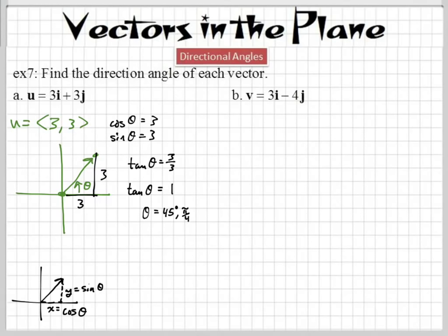Now, if you didn't remember that, you could have used inverse tangent, tangent inverse, or arctangent, but this is an angle that you guys should know. So, what's our directional angle? It's 45 degrees. That's it.